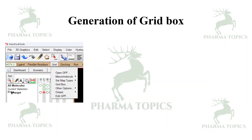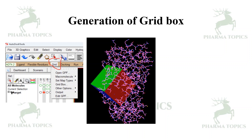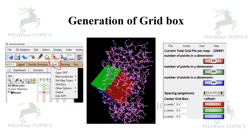For grid generation, there is a tab called Grid where you can load the macromolecule and ligand and create a grid box. You define the space around the active site — this defined space is called a grid box. If no space is defined, it is called blind docking, used when you don't know the active site. You can adjust the XYZ coordinates; the preferred grid size in AutoDock is 60×60×60.